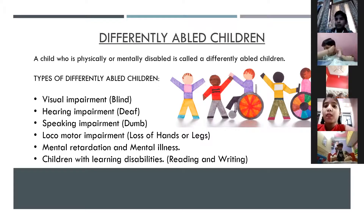Next is Hearing Impairment and Speaking Impairment — what we call deaf and dumb. Deaf means those children can't listen, and dumb means those children can't speak. Children who can't hear or speak by birth or by some accident use sign language to communicate.